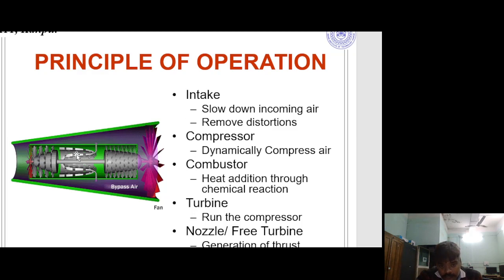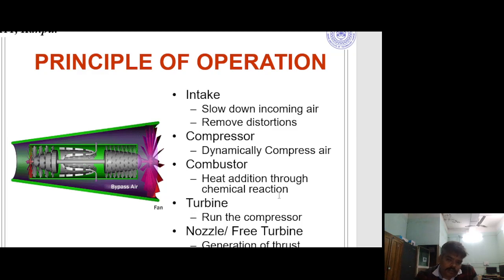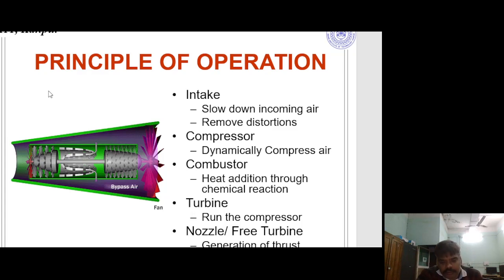After the compressor, the air passes through the heat exchanger. Combustion takes place, in which heat is added through chemical reaction. After that, the hot gas expands in the turbine and power is delivered, and then heat rejection takes place. Heat addition and rejection occur at constant pressure, while compression and expansion are at constant entropy.